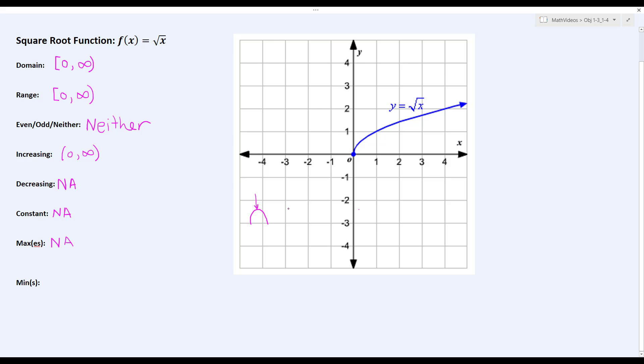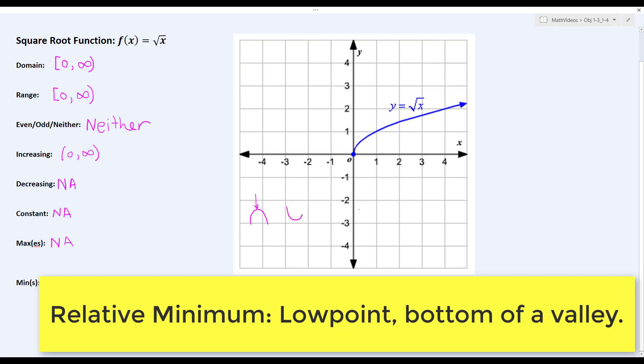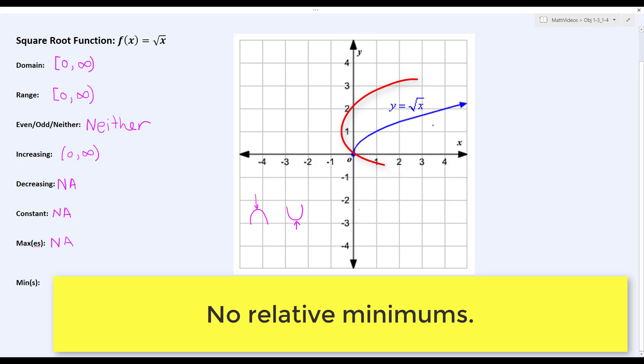Now if you wanted to talk about a relative minimum, think of the low point of a valley, like this point here. Do we have any valleys on our function? We can see that we do not, and so there are no relative minimums.